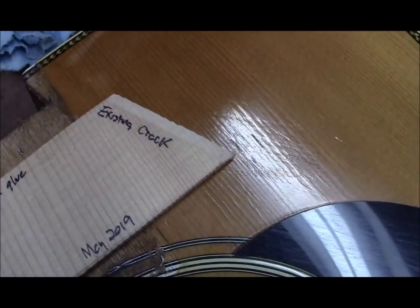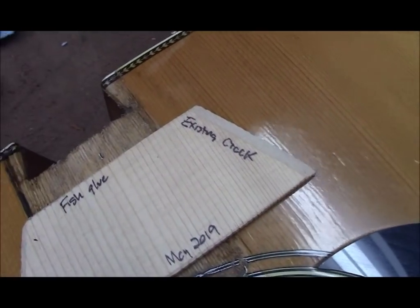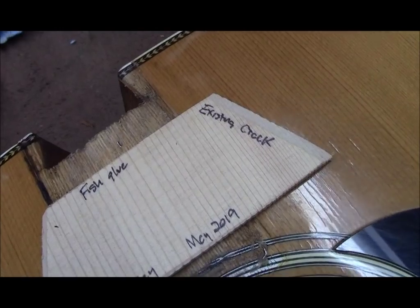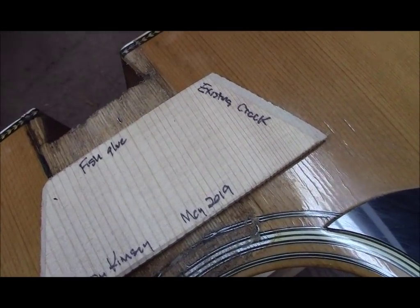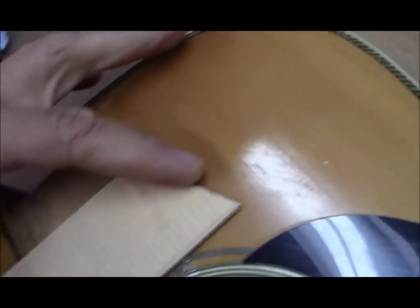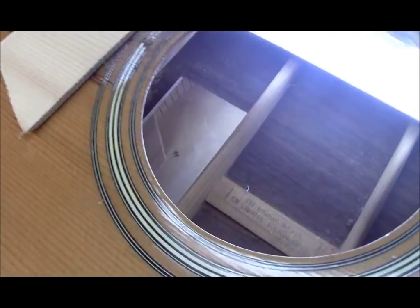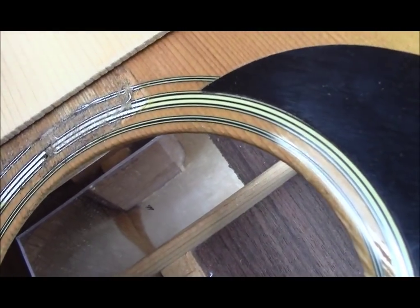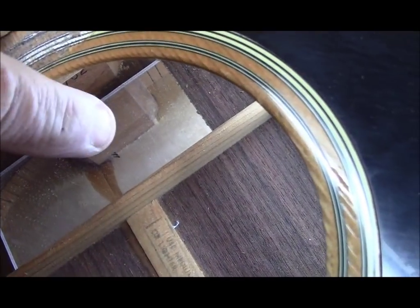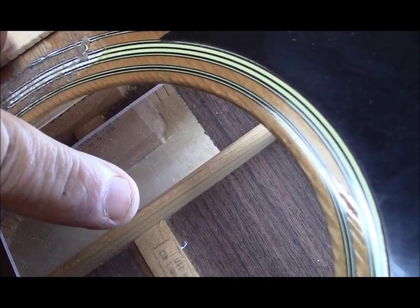And of course the guitar says the existing crack is gonna be over here. So what I'm gonna do is glue this in here and it's going to fit tightly or snugly at least between the neck block and the sound hole brace right here.